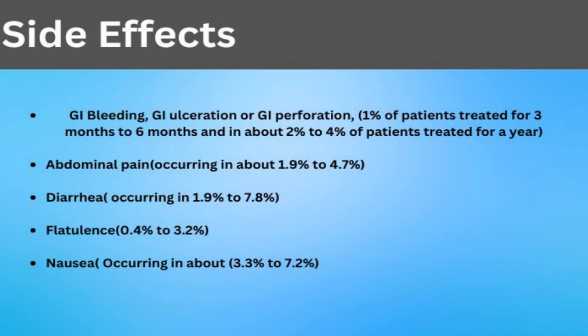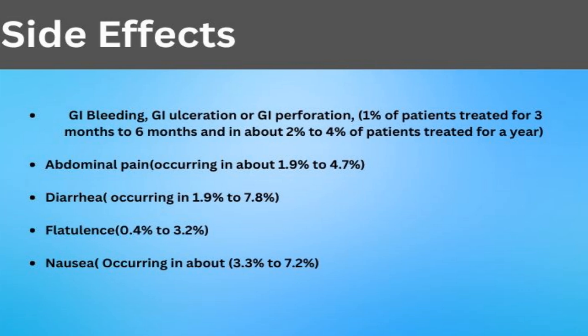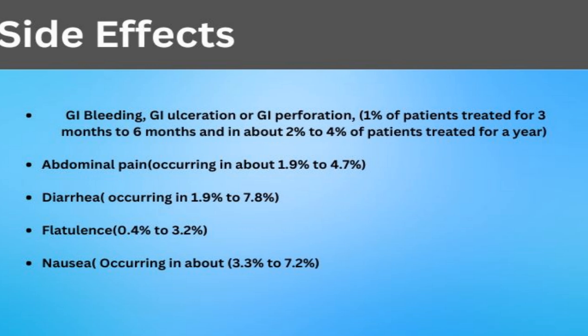Statistics show that about one percent of patients taking meloxicam for three to six months had some form of gastrointestinal issues. If you increase that duration to about a year, that percentage doubles or even quadruples in terms of the number of people experiencing gastrointestinal bleeding or ulceration.